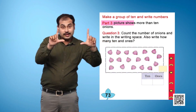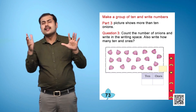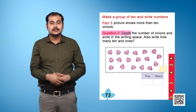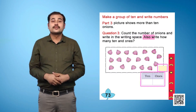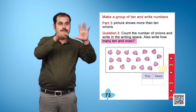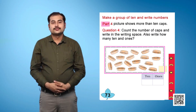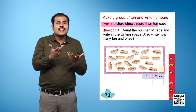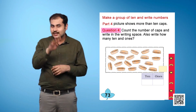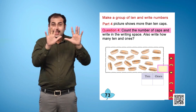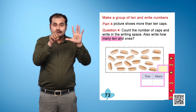Part 3 picture shows more than 10 onions. Question 3: Count the number of onions and write in the writing space. Also write how many 10s and ones. Part 4 picture shows more than 10 caps. Question 4: Count the number of caps and write in the writing space. Also write how many 10s and ones.